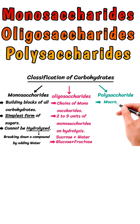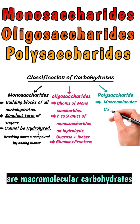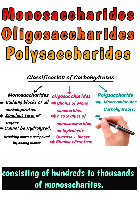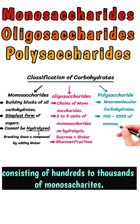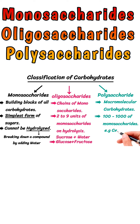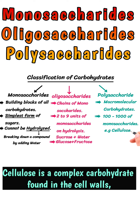Polysaccharides are macromolecular carbohydrates consisting of hundreds to thousands of monosaccharides. One common example of a polysaccharide is cellulose, which is a complex carbohydrate.